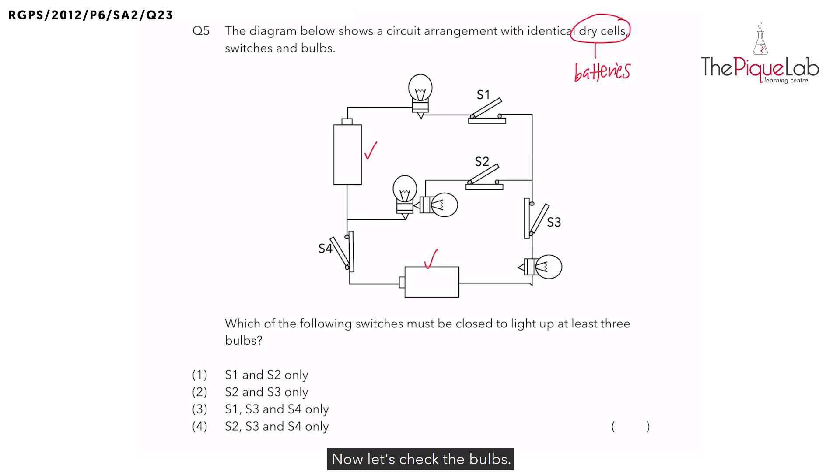Now let's check the bulbs. They must be connected at two points for the bulbs to light up: the metal casing and the metal tip. Now these three bulbs are all connected properly. I'm gonna label them as bulbs 1, 2 and 3.